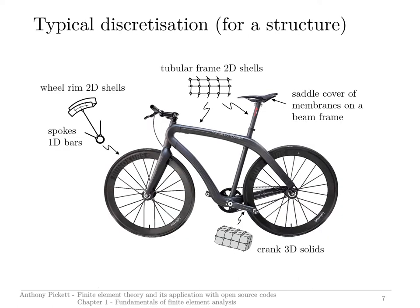This is an example I like to go through with students. It gives some idea of how elements could be combined to make up a structure. Looking at the wheels first, each of the spokes is pin-ended — moments are not transferred — so you could represent each spoke with a 1D bar element. You could not use several bar elements per spoke, because that would create a mechanism and computationally it wouldn't work.